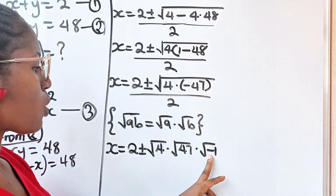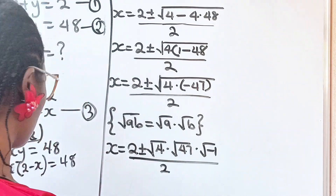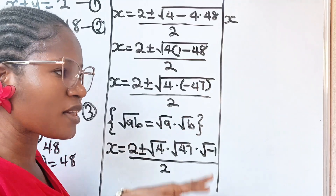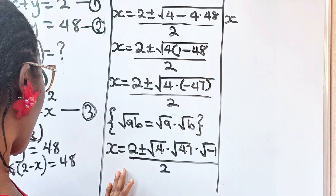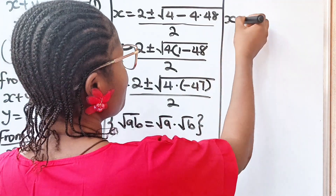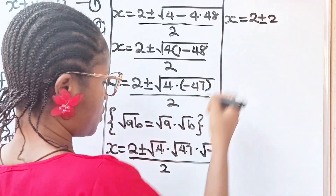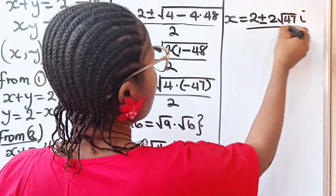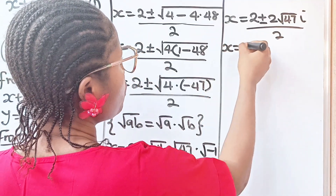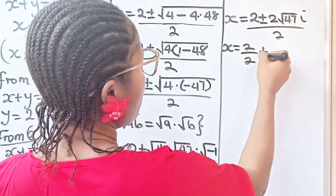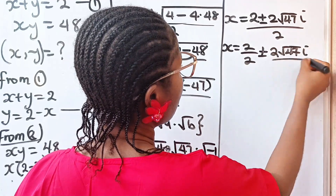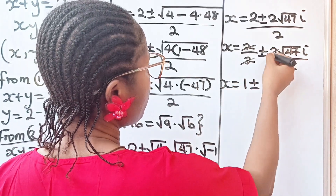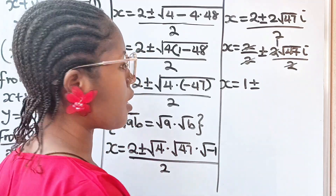Recall that the square root of minus 47 equals the square root of 47 multiplied by the square root of minus 1, which is i, since minus 47 equals minus 1 times 47. So the square root of 4 times minus 47 simplifies to 2 times the square root of 47 times i. Therefore x equals 2 over 2 plus or minus 2 root 47i over 2, which gives x equals 1 plus or minus root 47i.